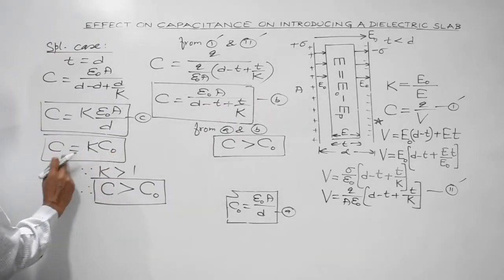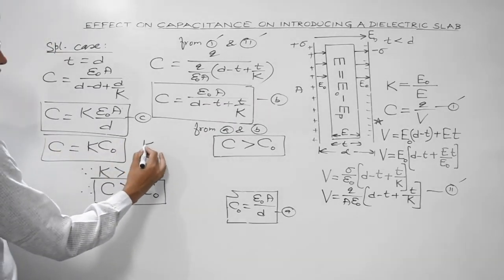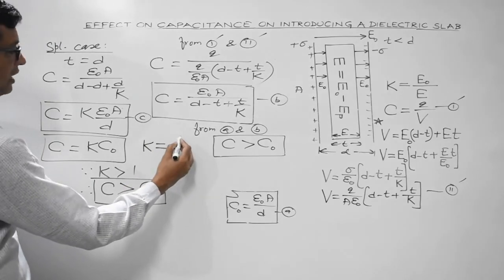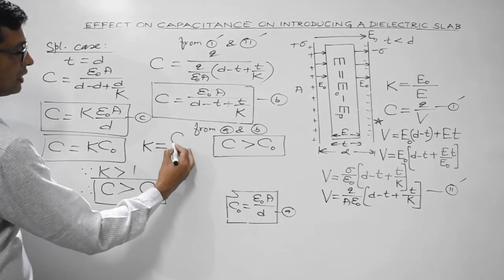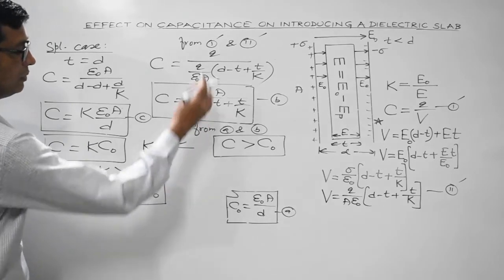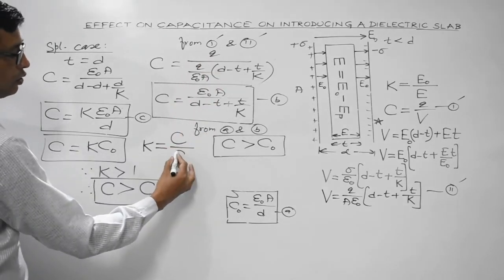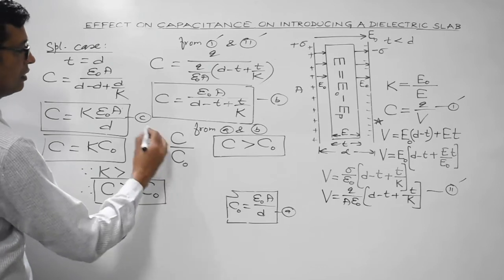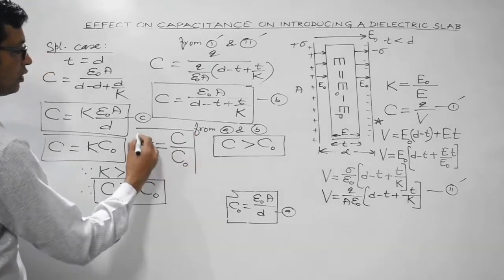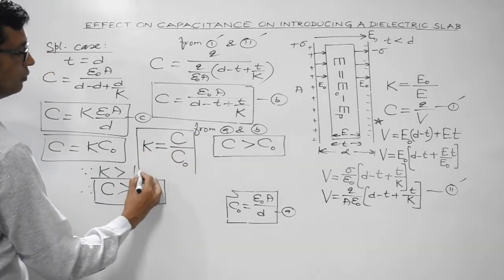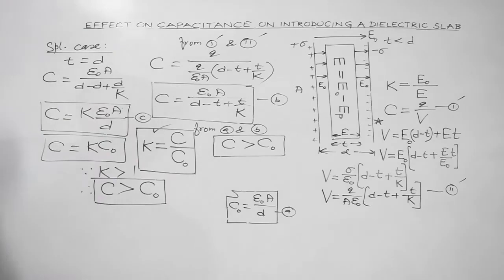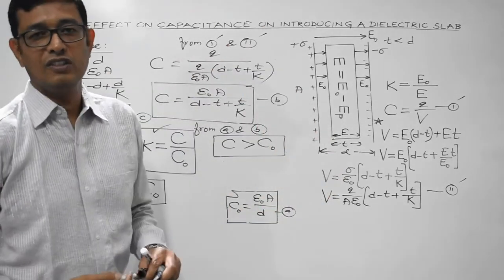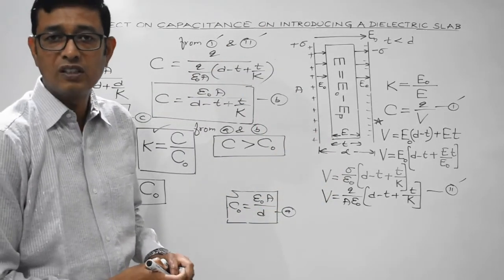This is also how the dielectric constant can be defined: the dielectric constant K of a medium is the ratio of the capacitance of the capacitor when the medium is introduced to the capacitance when the space is filled with air or vacuum. Please remember all these concepts — they are very important.